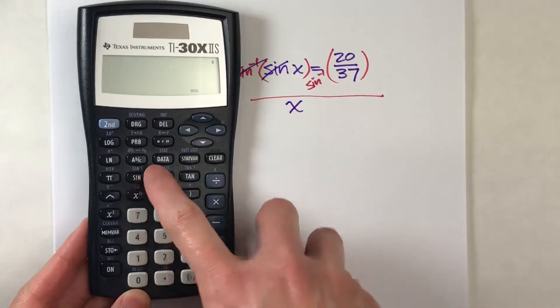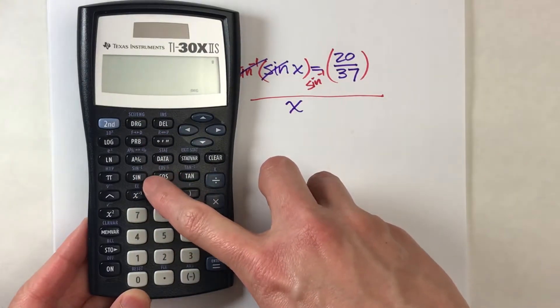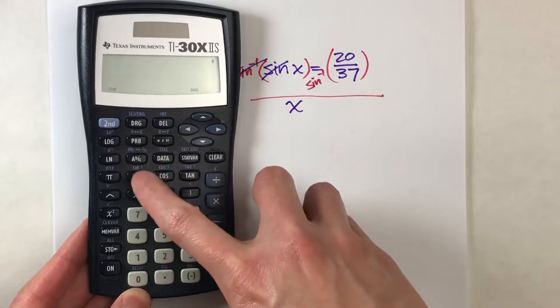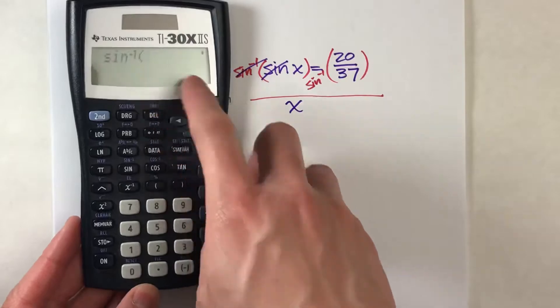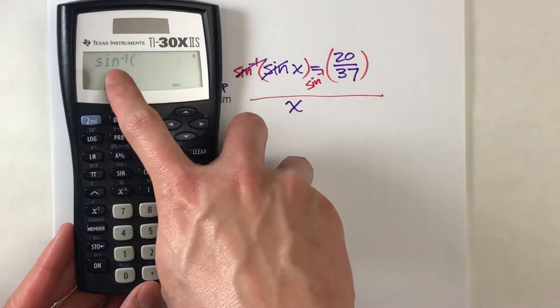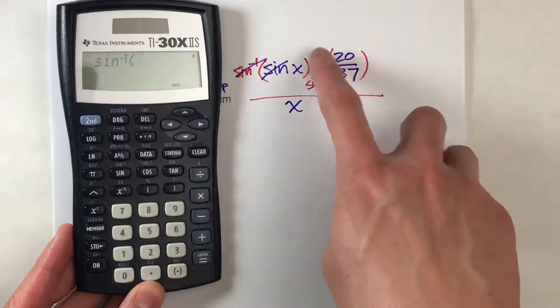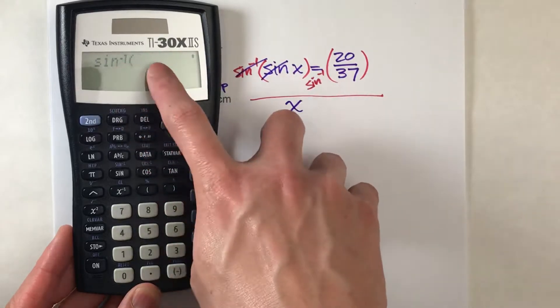Now on my calculator, the inverse sine is right above sine. So I go second sine, and notice, I've got sine to the negative 1 power. That doesn't mean an actual exponent. What it is is symbolic of inverse sine. It's we're undoing sine.